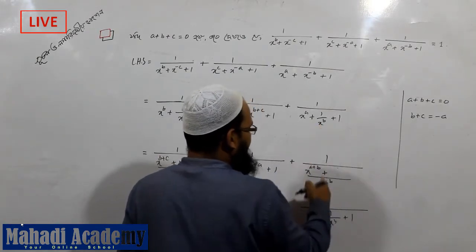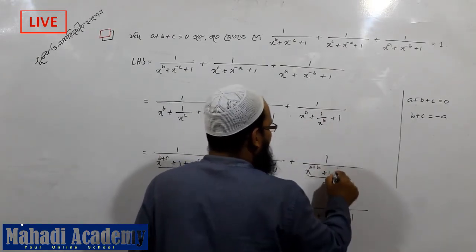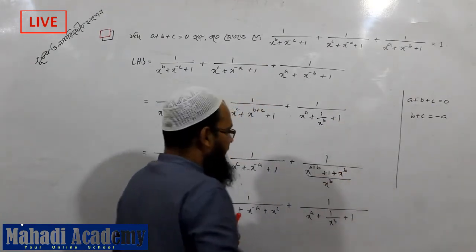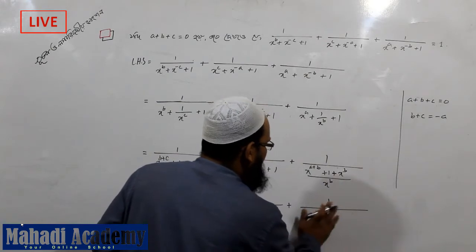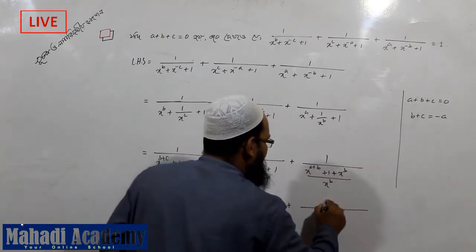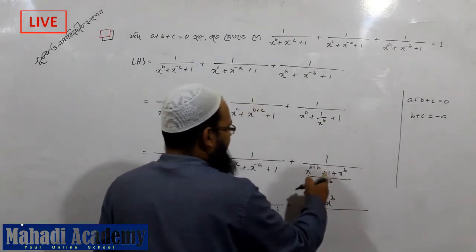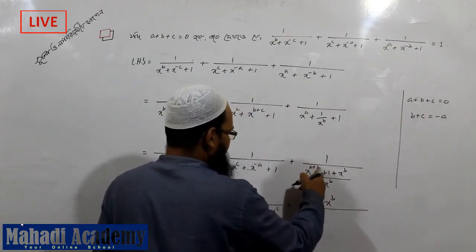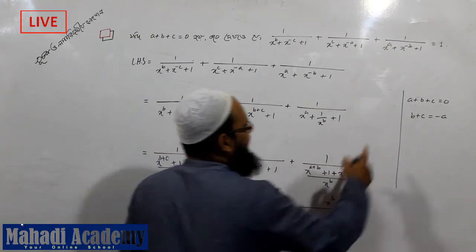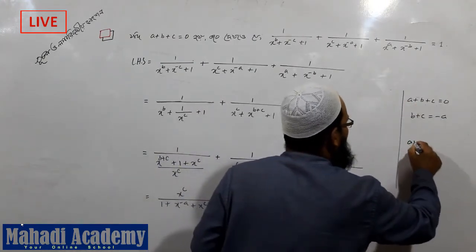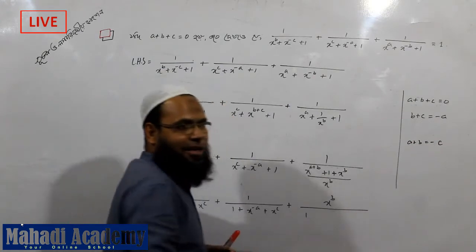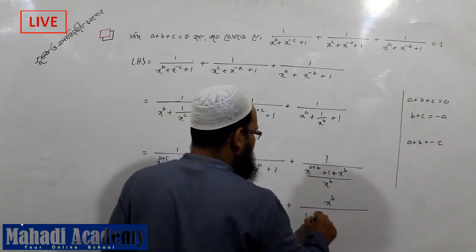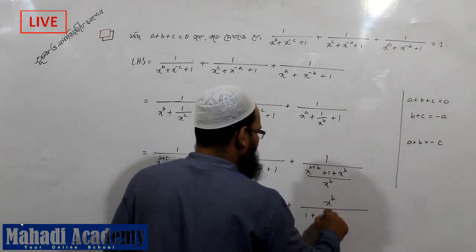Plus a, 1, x to the power b, x to the power b cancel, 1, and plus x to the power b, x to the power b, x to the power b. A is a plus b, a plus b, a plus b, a plus b, minus c, a plus b, x to the power b.